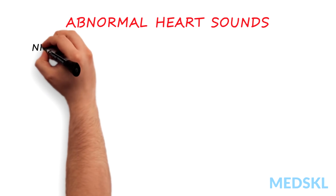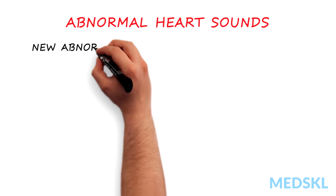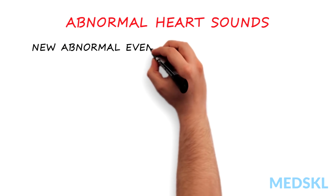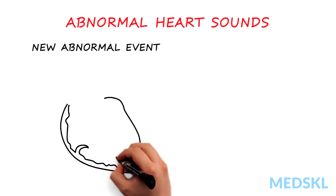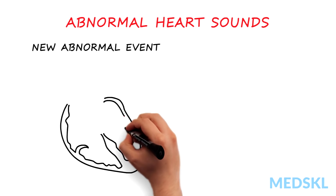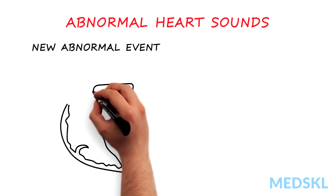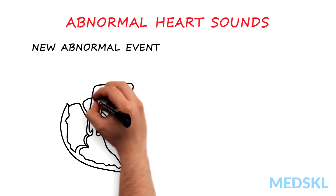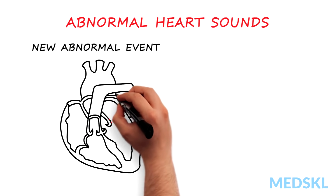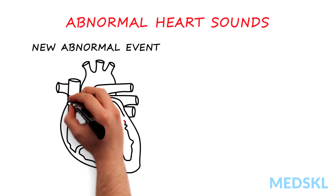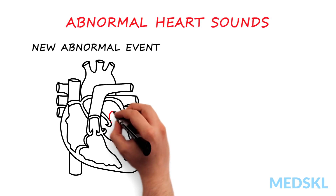A second mechanism accounting for abnormal heart sounds is when a new abnormal event happens in the heart. The systolic click that results from a floppy mitral valve prolapsing backward into the left atrium during systole is a good example.